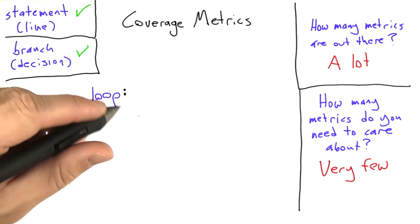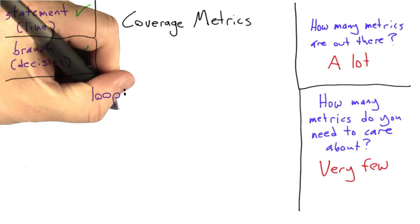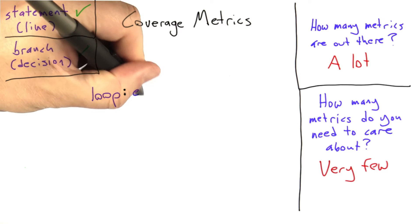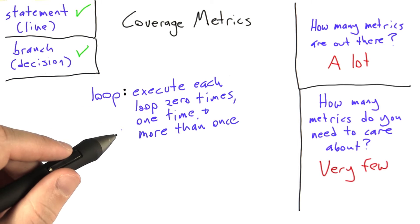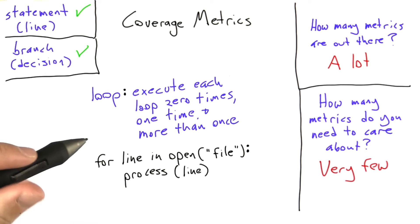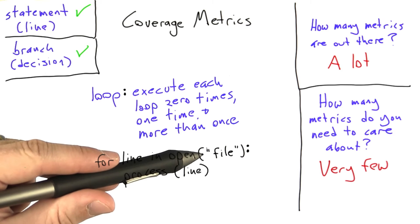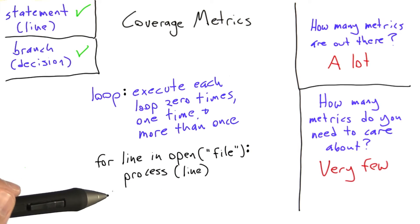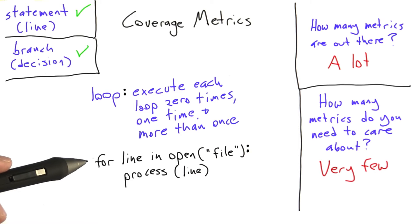Loop coverage is very easy. It simply specifies that we execute each loop zero times, once, and more than once. The insight here is that loop boundary conditions are an extremely frequent source of bugs in real code. For example, if we had this loop in Python code: for line in open file, process line. To get full loop coverage, we would need to test using a file with no lines, a file with just one line, and a file with multiple lines.